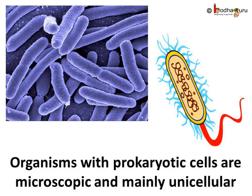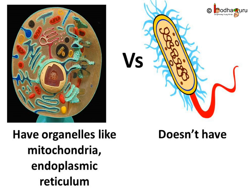We humans, including animals and plants we see around us, have eukaryotic cells. Eukaryotic cells are more organised and advanced compared to prokaryotic cells. For example, eukaryotic cells have organelles like mitochondria, lysosome, endoplasmic reticulum, etc., which prokaryotic cells don't have.